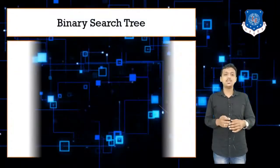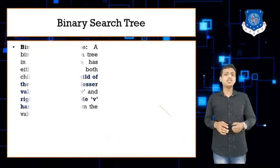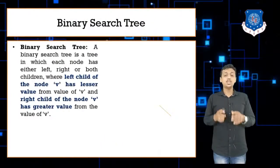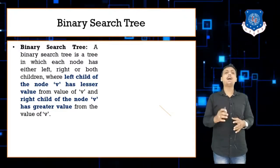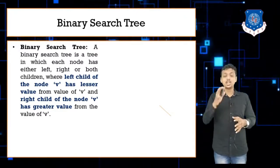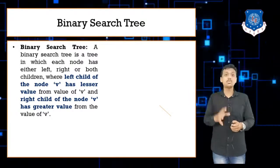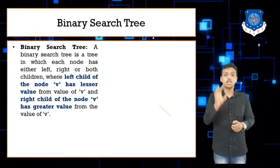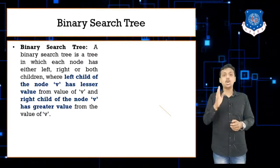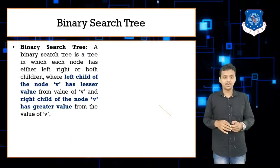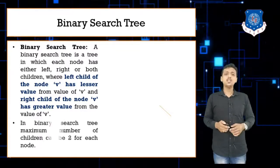Let's begin with the definition of binary search tree. A binary search tree is itself a binary tree in which the smallest values are situated on the left side of the node and the largest values are situated on the right side of the node.